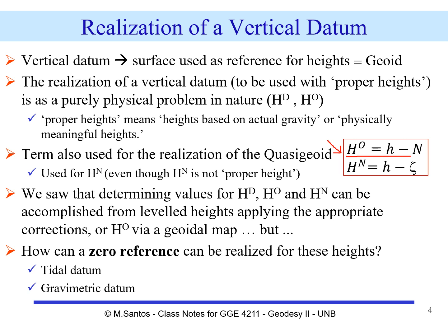We have the equation that we have seen before. The orthometric height can be computed as a difference between the geodetic height and the geoidal height. If we're dealing with a normal height system, this will be given by the difference between the geodetic height and the height anomaly.